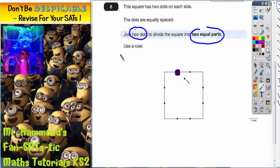If I join this dot down to here, again you can see those two parts are not equal - this one's much bigger than that one - so that can't be the answer.